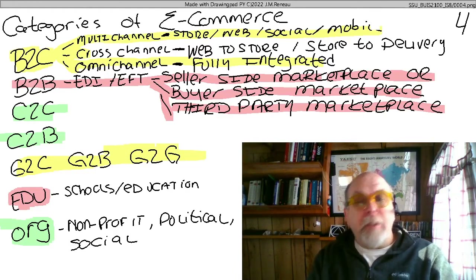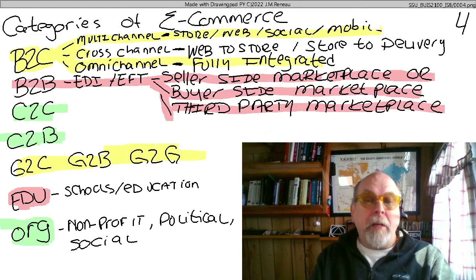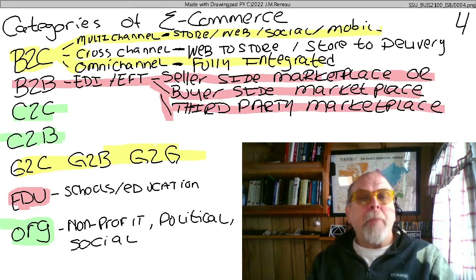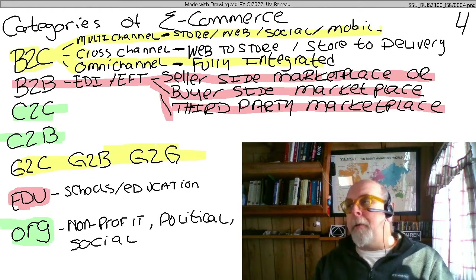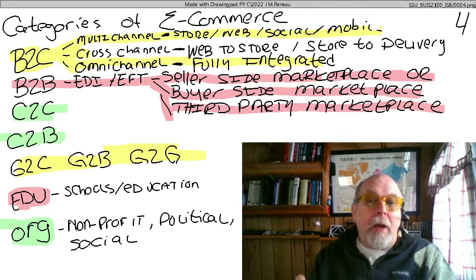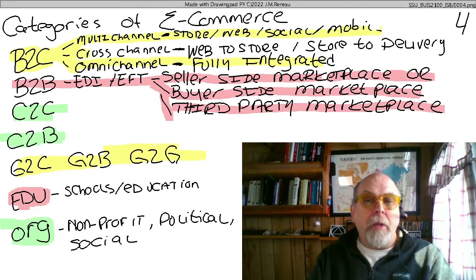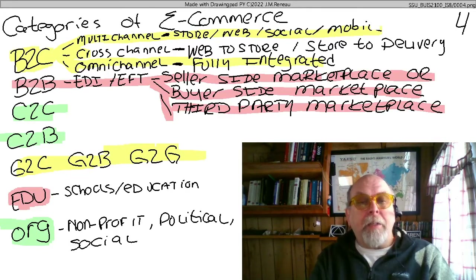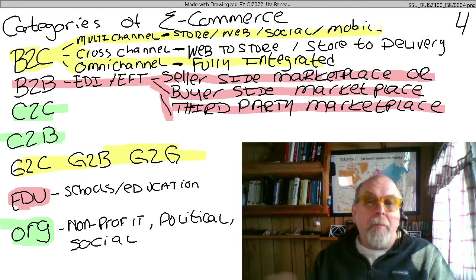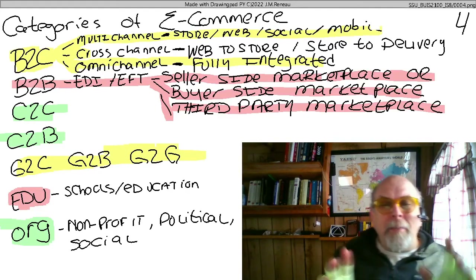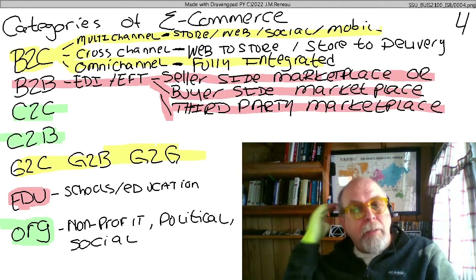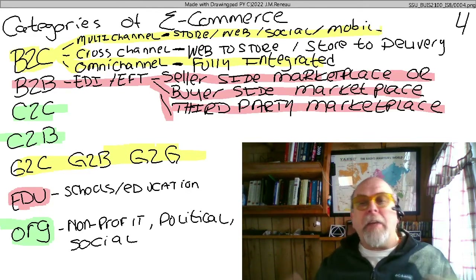C2C and C2B — same letters, just switched. Customer-to-customer e-commerce: think of parts of eBay or Etsy, where I create something, put it on the website, and it sells directly to another customer — a relationship between two customers with an intermediary in the middle. Customer-to-business is where a customer sells back to a business, which makes the customer essentially act like a small business, making it a small B2B. Some of these categories have fuzzy edges, but it's interesting to think about the different kinds of e-commerce.